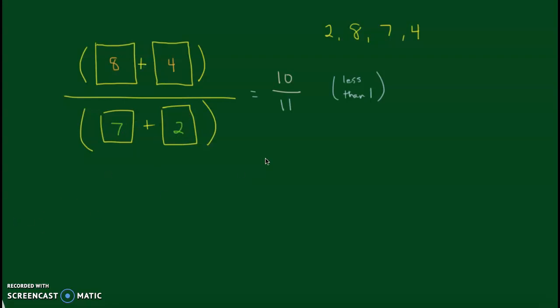So, eight plus four is twelve. I'm going to make a sideways equal sign. Eight plus four is twelve. And that's going to be over seven plus two, which is nine. So, twelve-ninths, we can see that twelve-ninths is bigger than one.